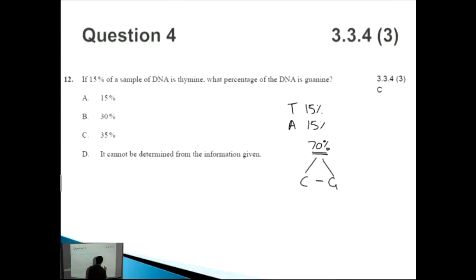And we know that C has got to equal G as well. So if we divide 70 by two, then we get 35%. That means 35% will be C or cytosine, and 35% will be guanine. So therefore our answer is C.